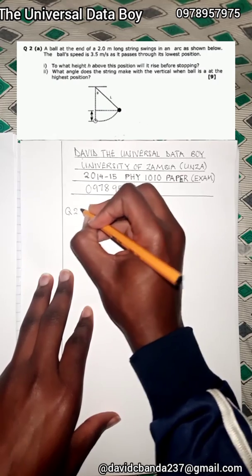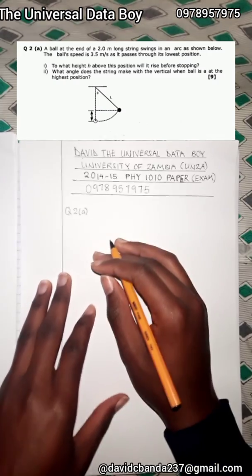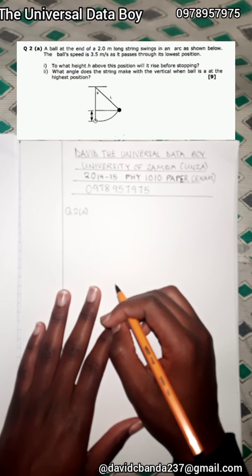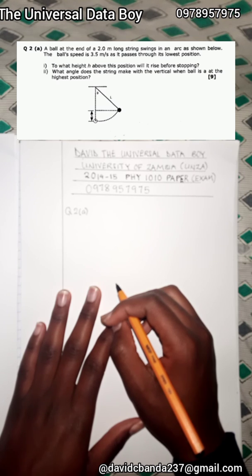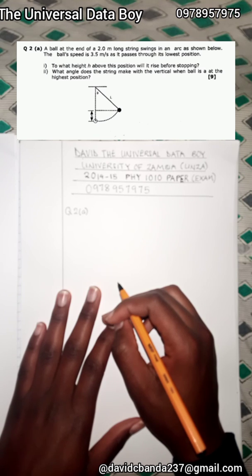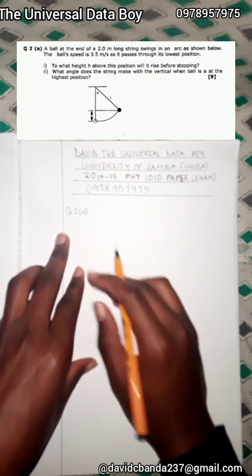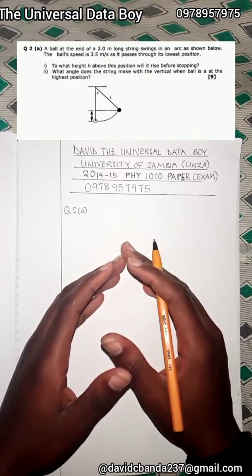Question two was the one that was requested. It states: a ball at the end of a 2.0-meter long string swings in an arc as shown. The ball's speed is 2.5 meters per second as it passes through its lowest position. Roman numeral one: to what height above this position will it rise before stopping? Roman numeral two: what angle does the string make with the vertical when the ball is at the highest position?